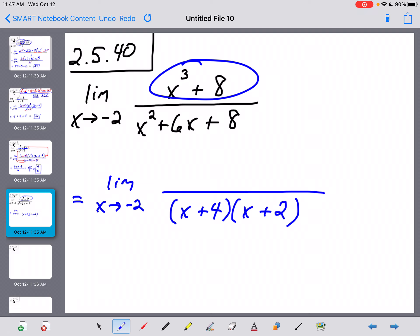Now, stop and ask yourself right now, which of those two factors in the denominator is the problem when x becomes negative 2? This one is fine. Negative 2 plus 4 is 2. This one is the issue.